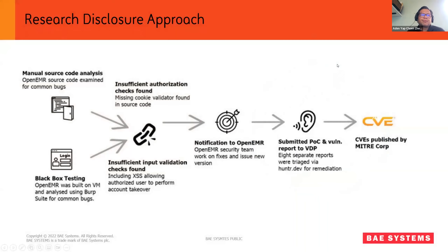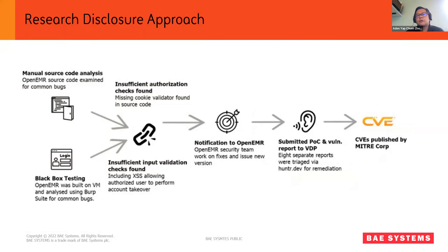Now we'll move on to the process of researching and finding these bugs. The bugs we found are not rocket science — we are not full-time security researchers; we are a bunch of pen testers and red teamers. Our job is not really to do security research, but we take on this opportunity in between projects. We have about maybe a month in a year shared among the three of us to just have a look using the same methodology as a typical pen test. We combine manual source code analysis and black-box testing by downloading the source code, analyzing it manually, and also using tools like Burp Suite to fuzz the endpoints.